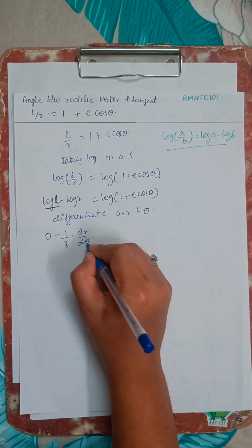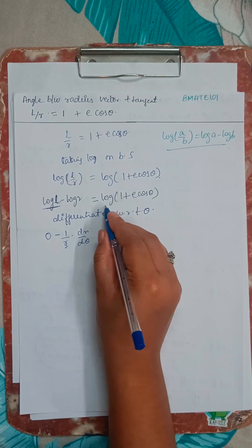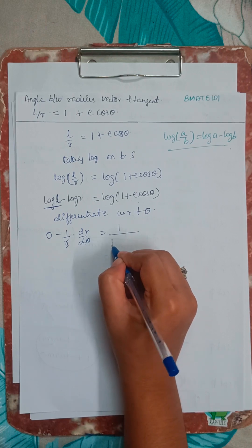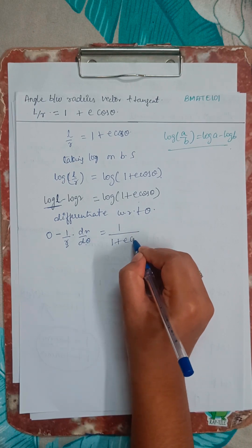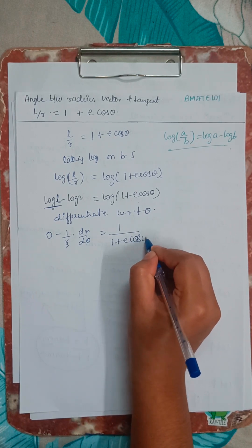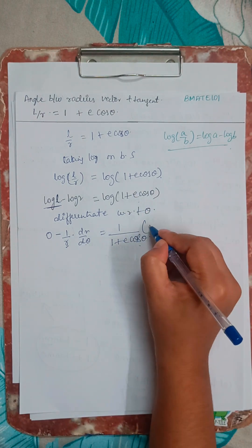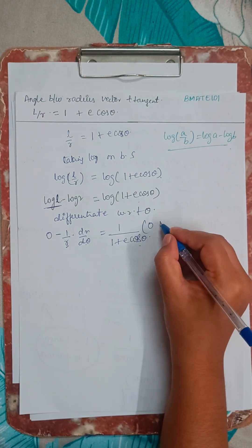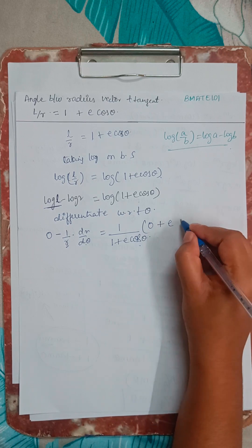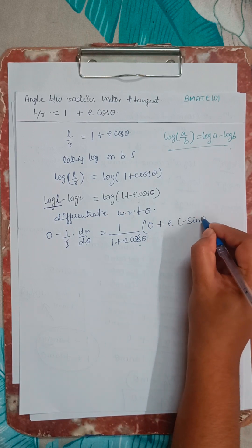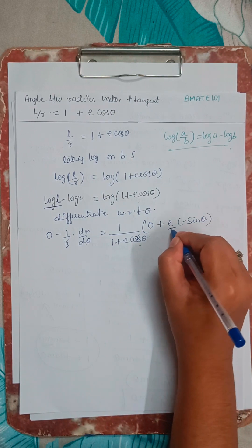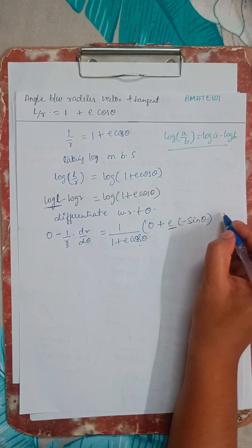Differentiation of R is dr by d theta equals log 1 plus E cos theta is going to be 1 by 1 plus E cos theta. So now the differentiation of 1 is 0 plus E cos theta is minus sin theta. Right? E is a constant, so E will be as it is.